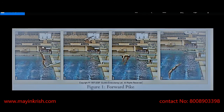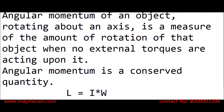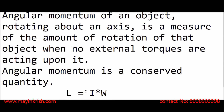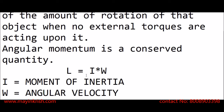The diver doesn't have any external torques causing rotation, which is what we mean by angular momentum here. Angular momentum is a conserved quantity — if there are no external forces, the object will maintain its angular momentum. The formula is L = I·ω, where I is the moment of inertia and ω is the angular velocity. They are inversely related: if moment of inertia increases, angular velocity decreases, and vice versa.